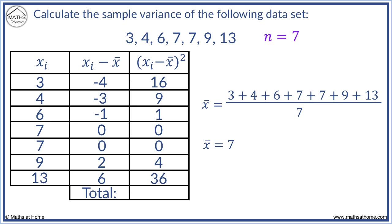Now we add these results together to obtain 66. Finally, we divide this total by n minus 1. n equals 7, so n minus 1 equals 6. 66 divided by 6 equals 11. Therefore, the variance equals 11.